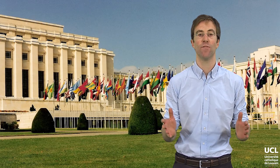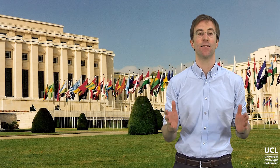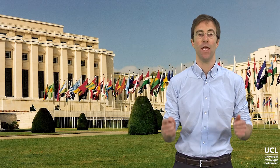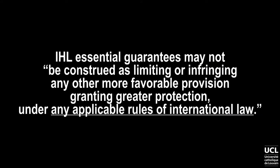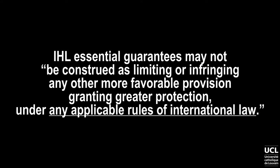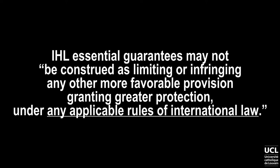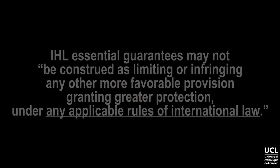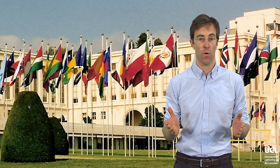Article 75, paragraph 8 of Additional Protocol 1 indicates that the essential guarantees that it provides to some persons may not be construed as limiting or infringing any other favourable provisions granting greater protection under any applicable rules of international law. Any applicable rules of international law implicitly refers to human rights law.